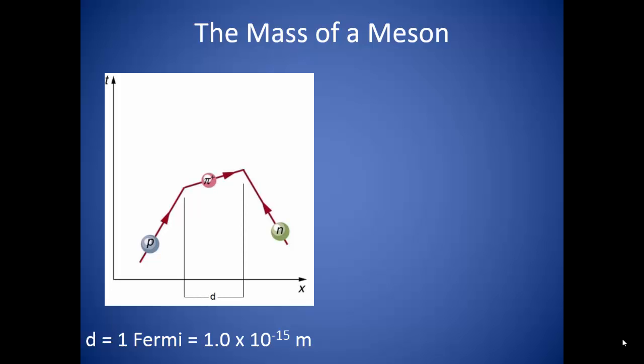At this point, the proton releases the meson. The meson is then absorbed by the neutron. The proton is rebounded away from the meson as the meson is released, and the neutron recoils in the other direction as the meson is absorbed.